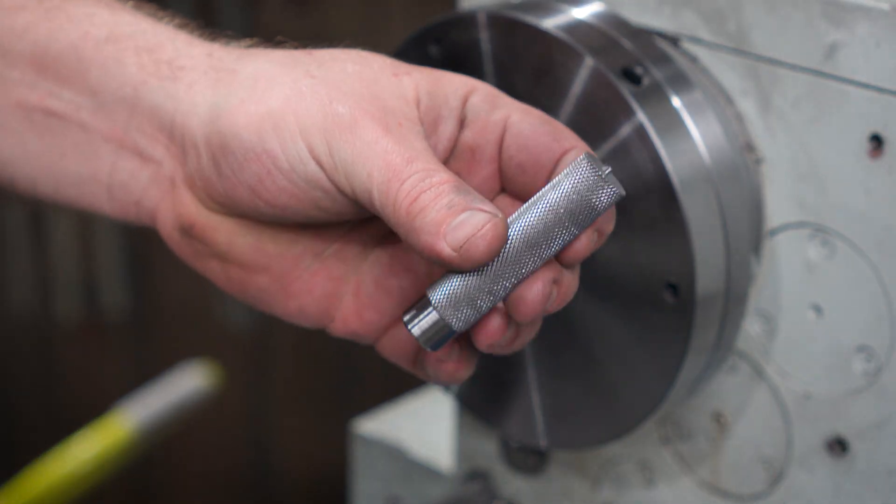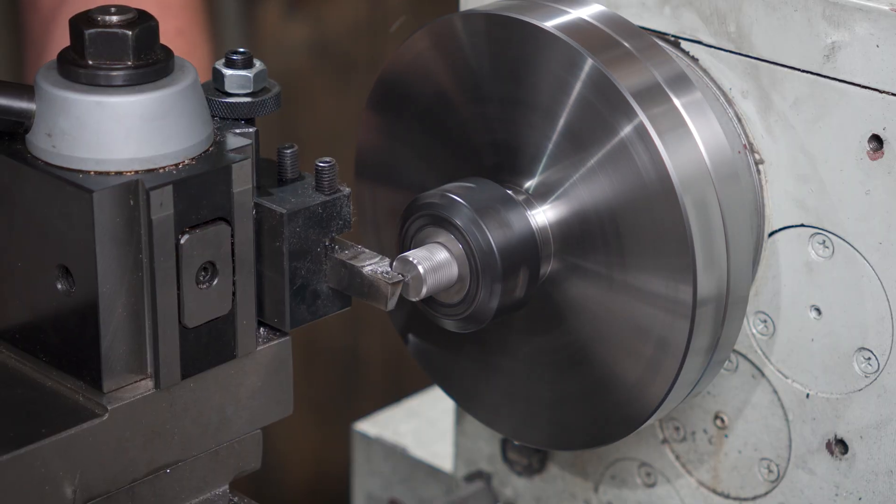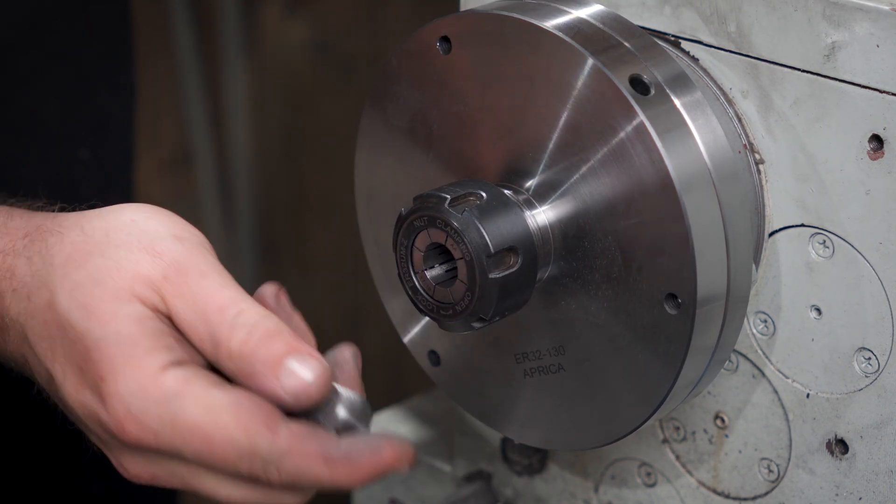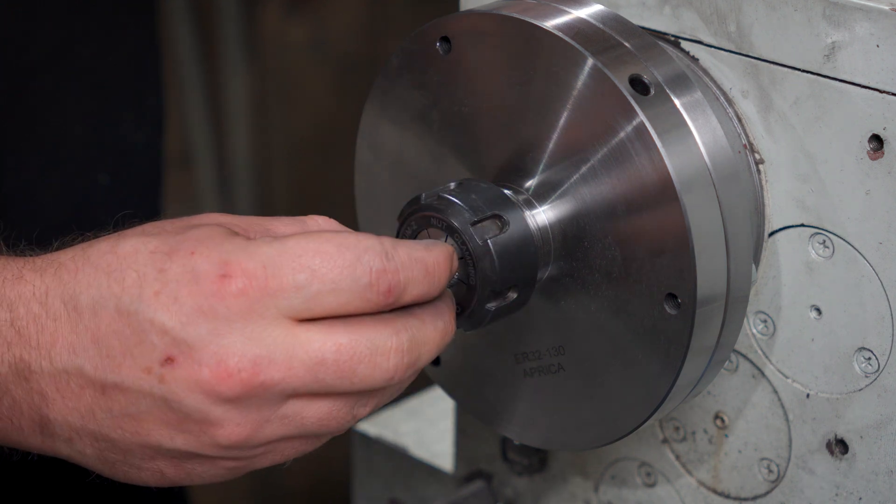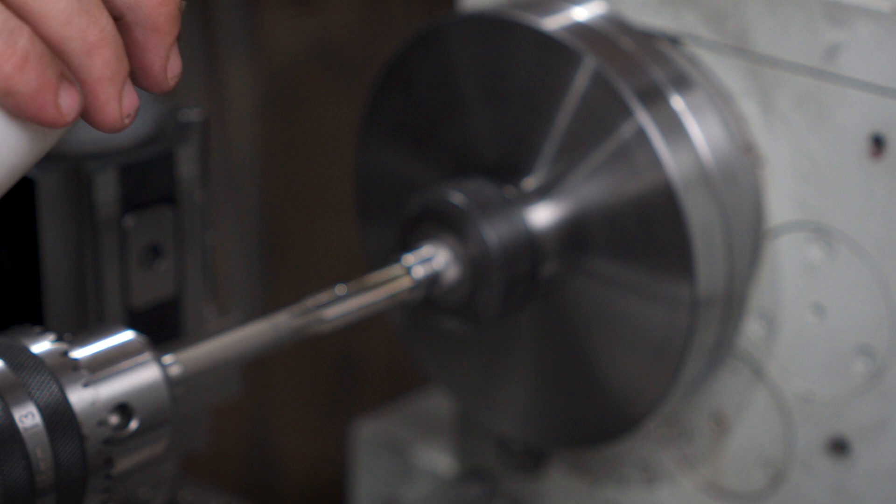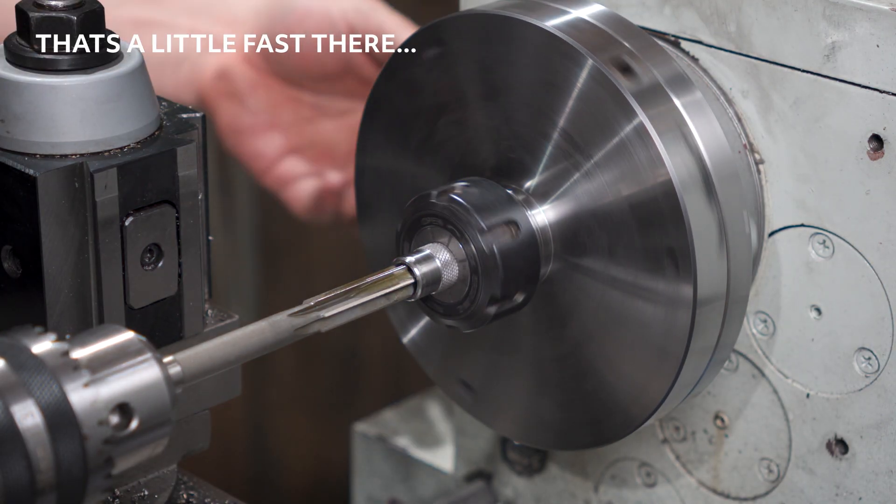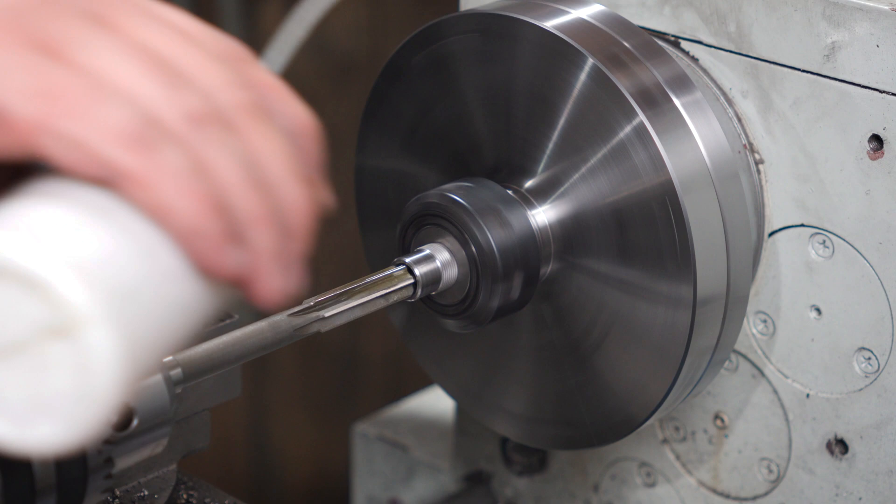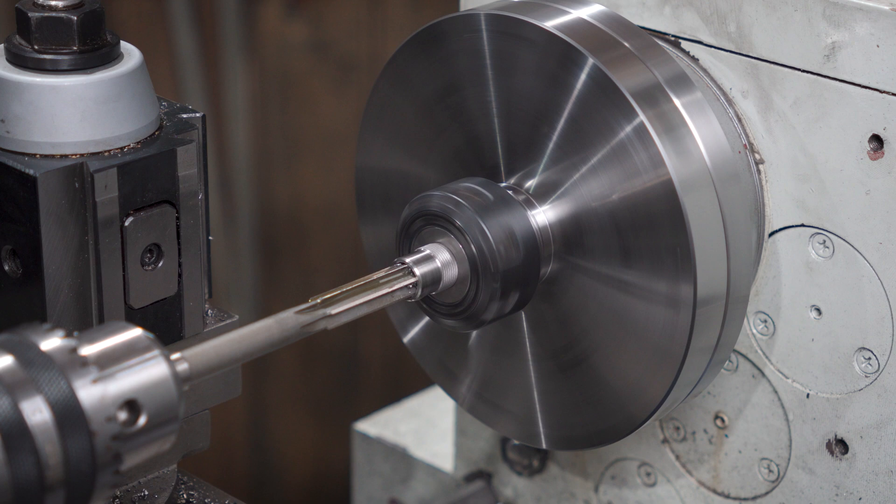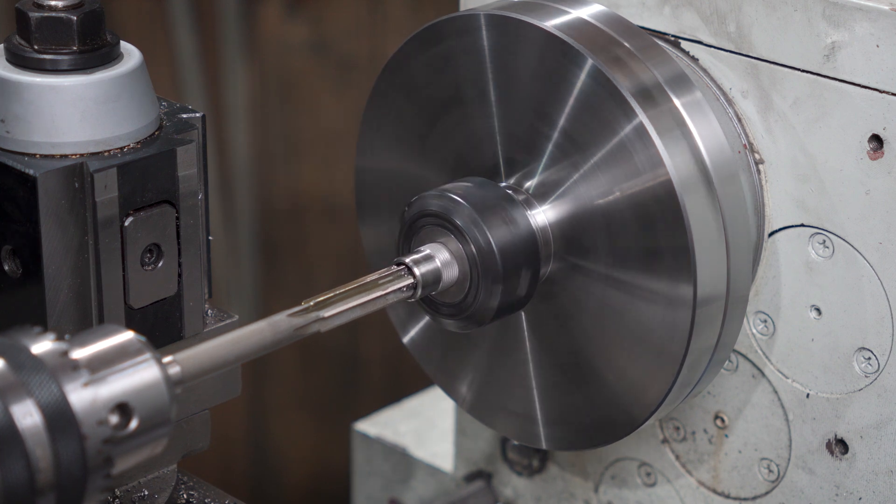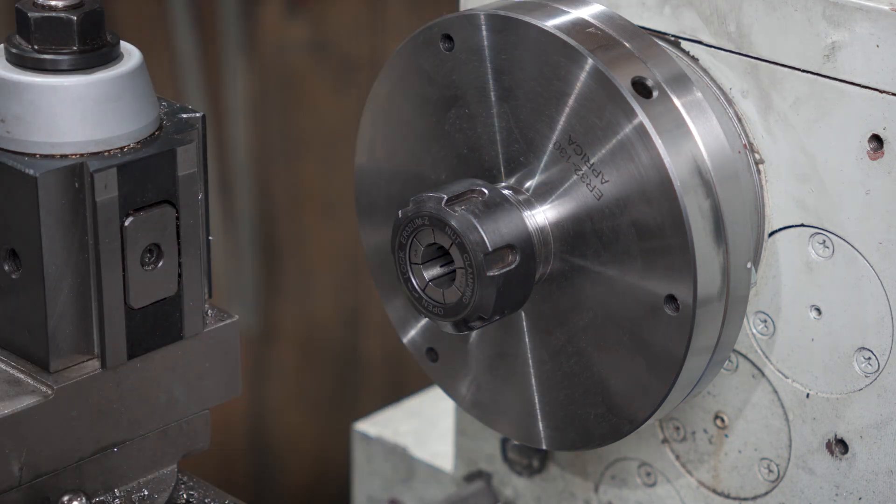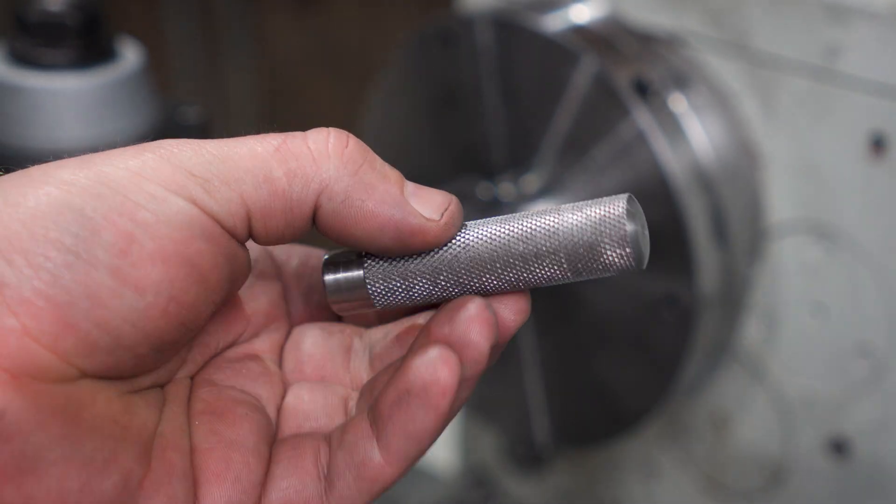And now just to clean up all the odds and ends, starting with the knurled cap. It can get the same treatment from the form tool so the two ends of the handles match. Then flip it over and ream a little short section to 12mm so it slides over the body of the handle just right. Then flip it over again.